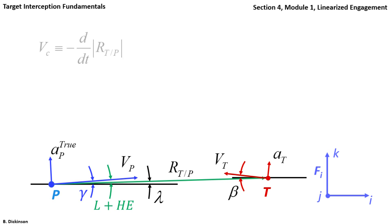In the previous section, we defined closing velocity as minus the time rate of change of the range. Here, because VP and VT are essentially aligned with one another, we approximate closing velocity as the sum of the pursuer and target velocity magnitudes. Closing velocity in the linearized engagement is constant.